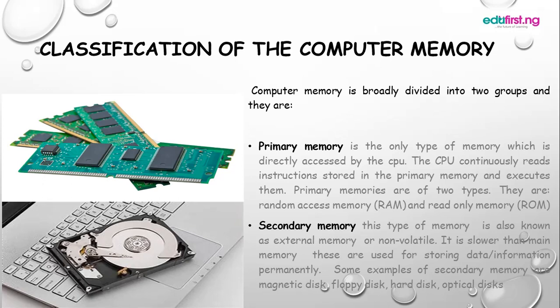Now let's look at the classification of computer memory. Computer memory is broadly divided into two: we have the primary memory and we have the secondary memory. The primary memory is the type of memory which is directly accessed by the CPU, that is the central processing unit. The CPU continuously reads instructions and stores them in primary memory, that is the main memory, for execution.